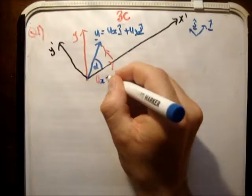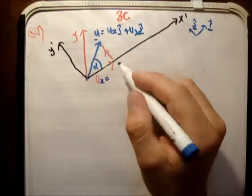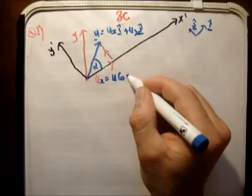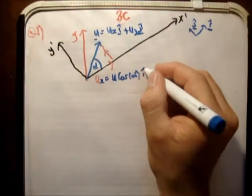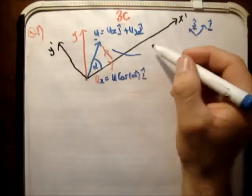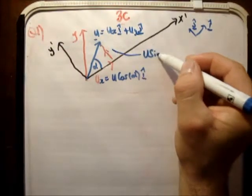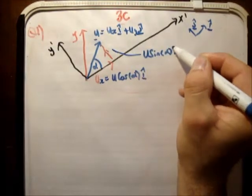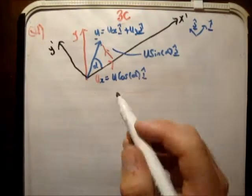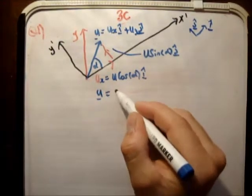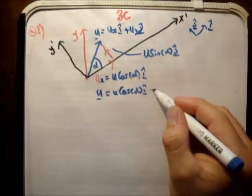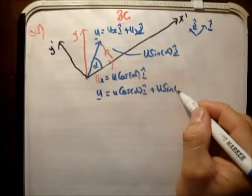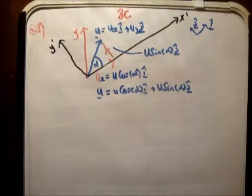So u sub x is equal to u times the cosine of alpha, in the i hat direction. And u sub y is equal to u times the sine of alpha in the j hat direction. Therefore u equals u cosine alpha i hat plus u sine alpha j hat. And that's nothing you haven't done in the past.